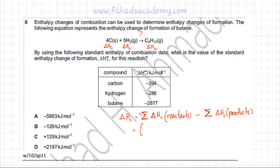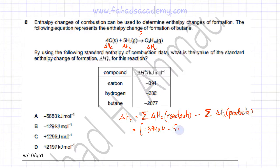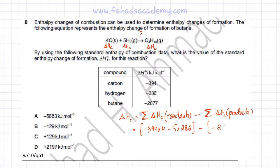Summing the enthalpies of combustion of reactants: we have 4 carbons, and the enthalpy of combustion of one carbon is -394, so for 4 it's -394 multiplied by 4. The other reactant is 5 hydrogen molecules, and the enthalpy of combustion of one hydrogen is -286, so that's -286 multiplied by 5. These are the reactants minus the product — there is only one product, C₄H₁₀, and for butane the enthalpy of combustion is -2877, so we subtract (-2877).